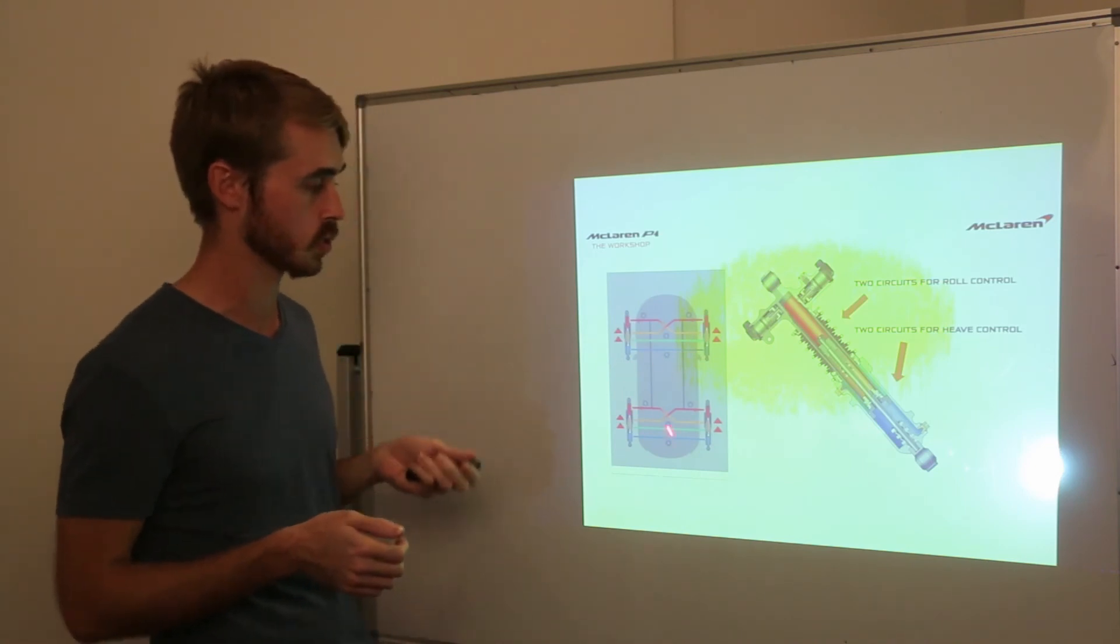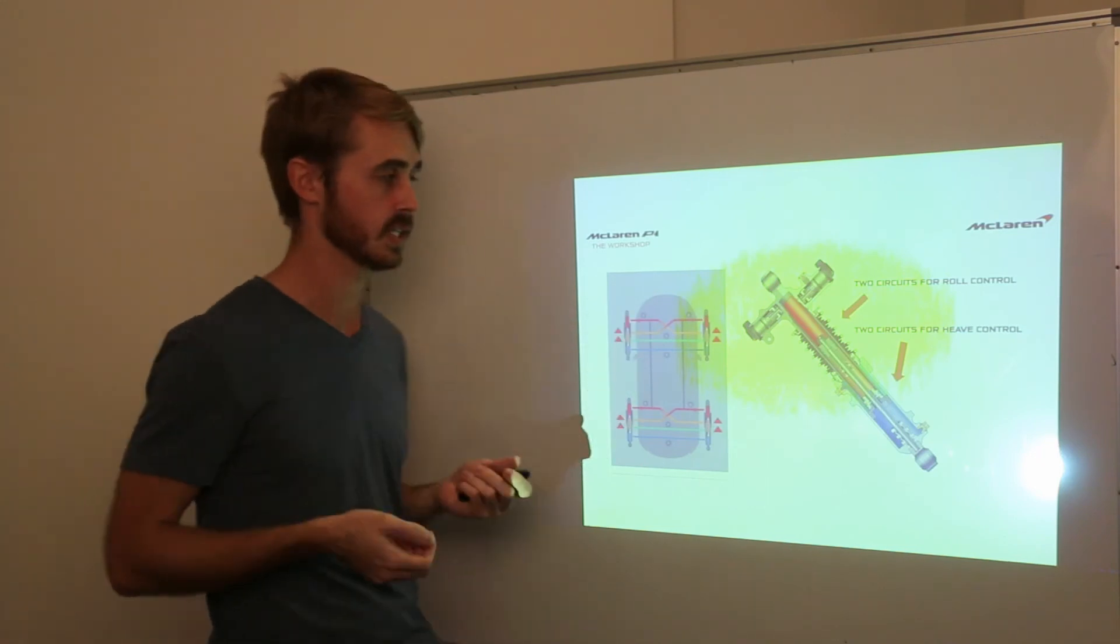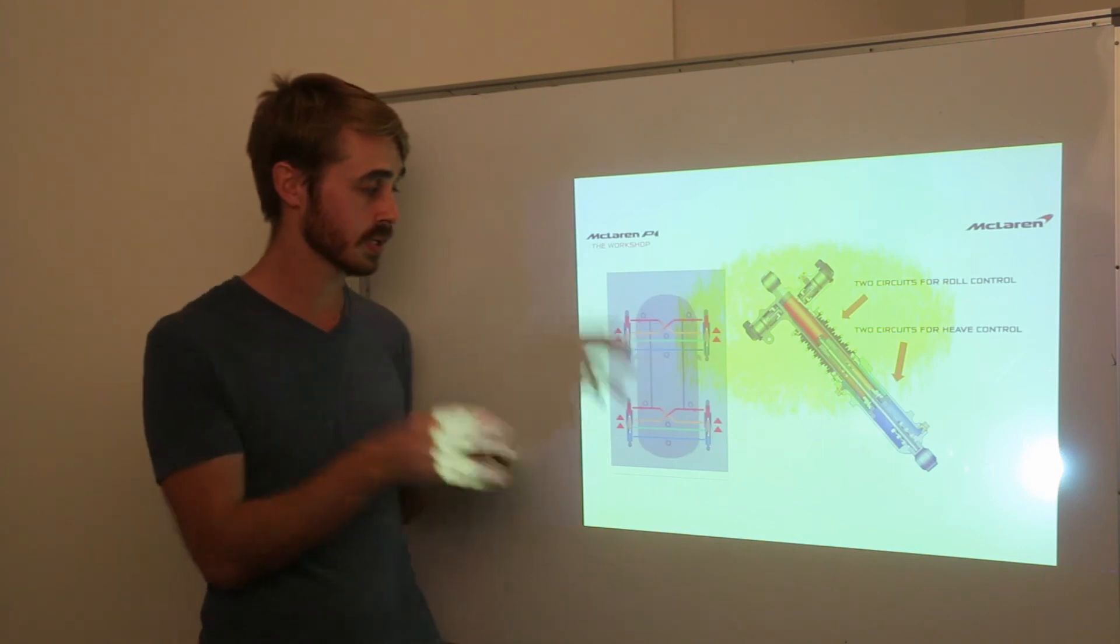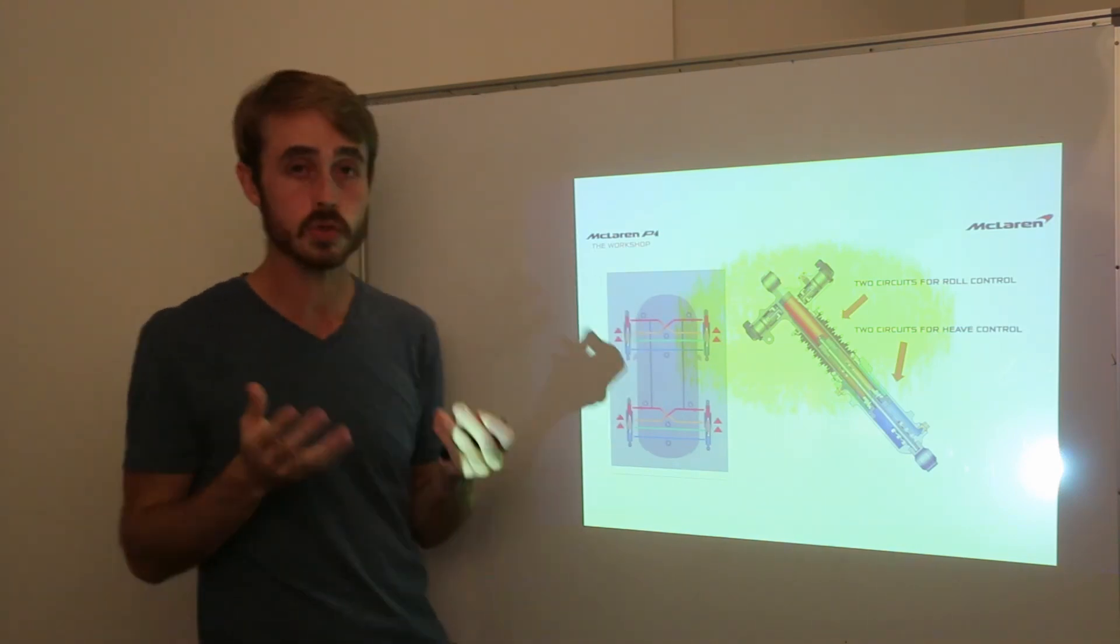You've basically got hydraulic anti-roll, and each damper has multiple circuits in it that all can communicate with the other dampers to control roll, pitch, all that. The most critical thing in any race car these days is working the undertray, getting the floor right.